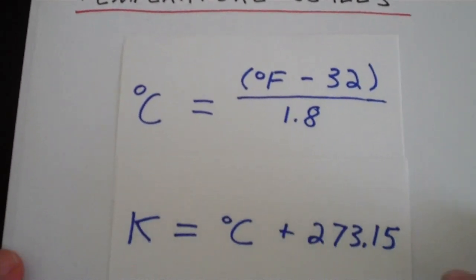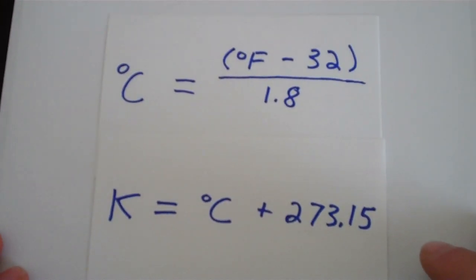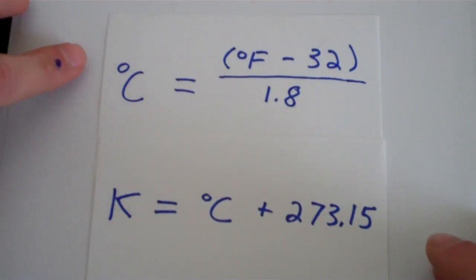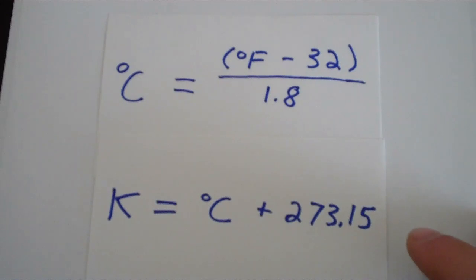So really all you need to do is just commit these two formulas to memory. The top one involves Celsius and Fahrenheit, and the bottom one involves Celsius and Kelvin.